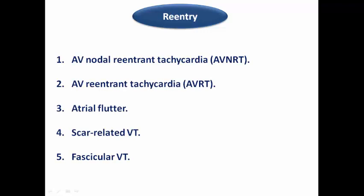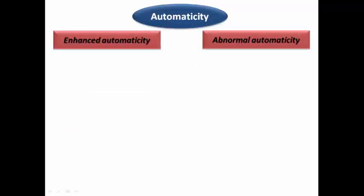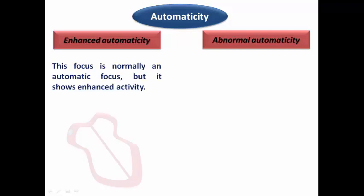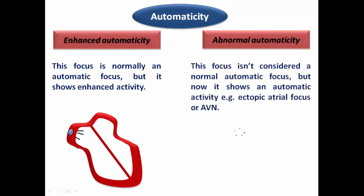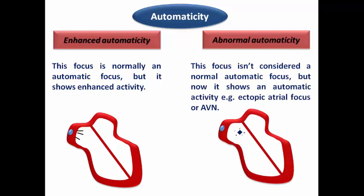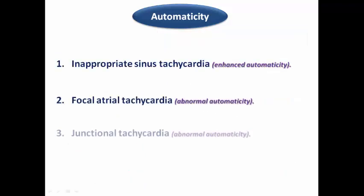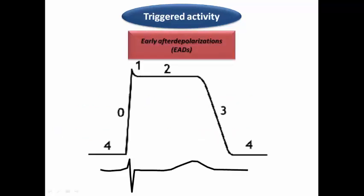Regarding automaticity: enhanced automaticity means the focus is normally automatic — like the SA node — but now shows enhanced activity. Abnormal automaticity means the focus is not normally automatic but shows abnormal activity, like an ectopic atrial focus or ectopic AV node. The three famous types are inappropriate sinus tachycardia, focal atrial tachycardia, and junctional tachycardia.